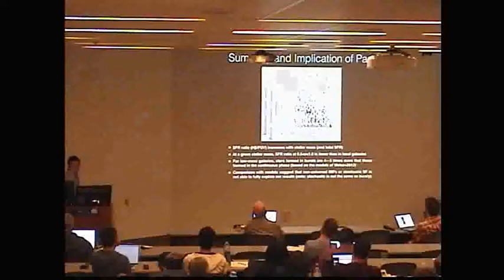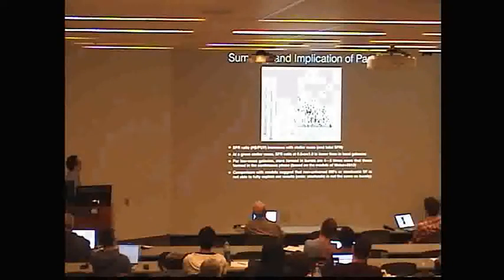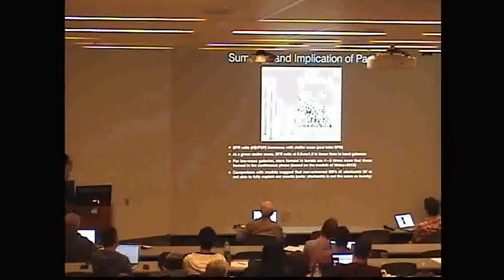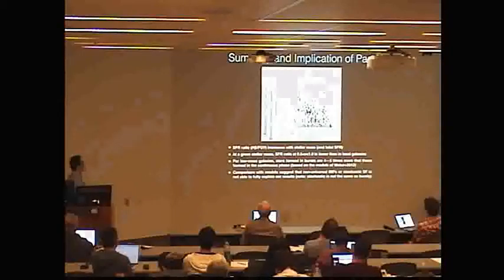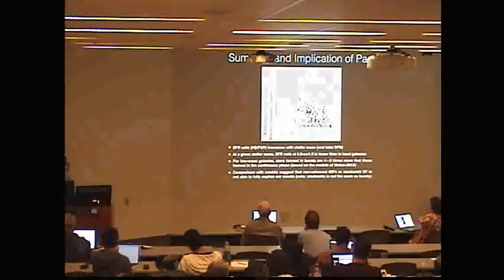We can actually convert the H-beta ratio to a burstiness parameter, which tells you the ratio of stars formed in bursts over the number of stars formed in the smooth phase. To do that, we use the model from Bissel et al. If the ratio is one, that means equal amounts of stars are formed in bursts and in the smooth phase. If the ratio is greater than one, you have more stars formed in the bursty phase than in the smooth phase.